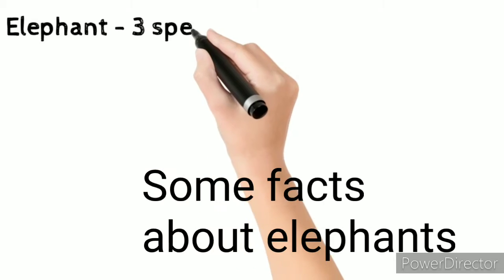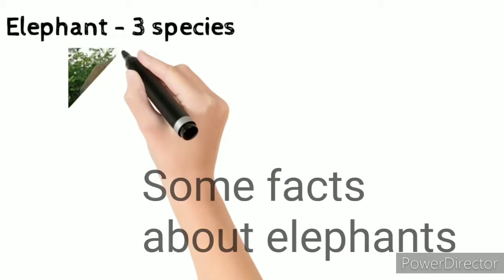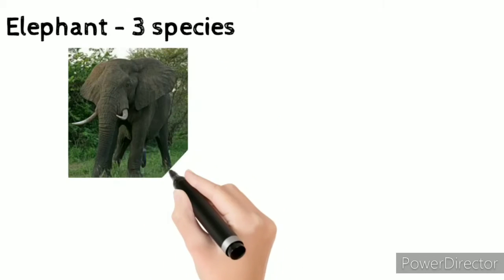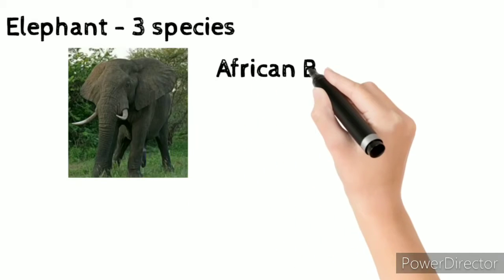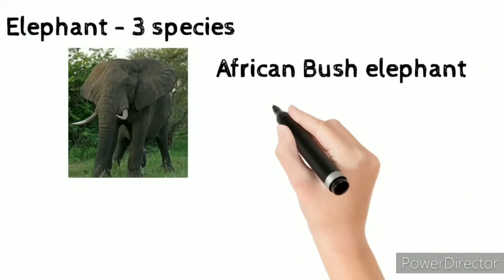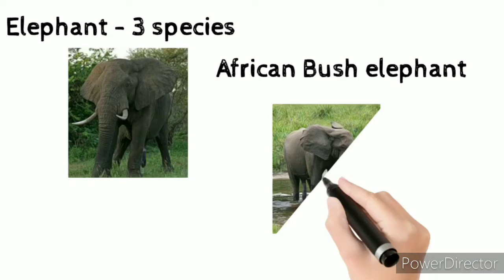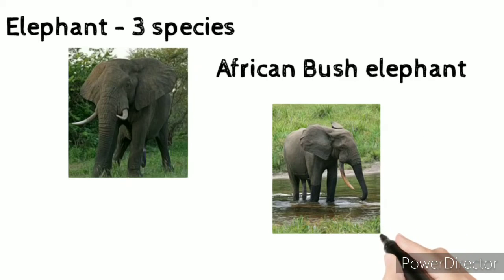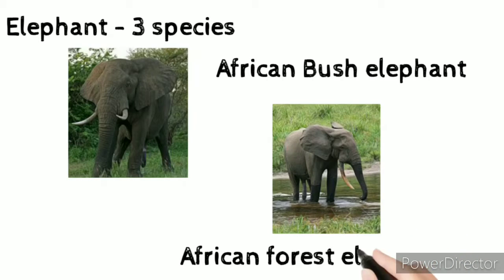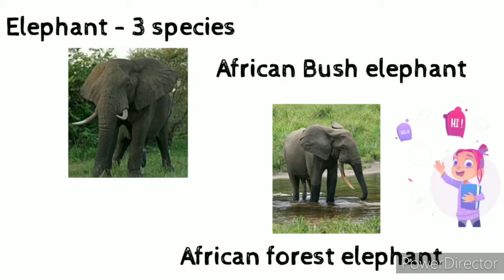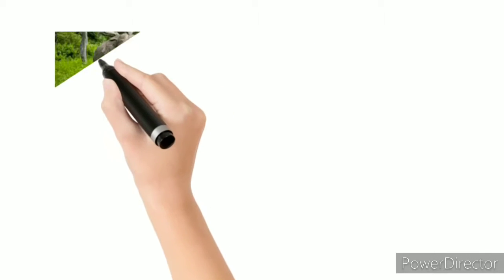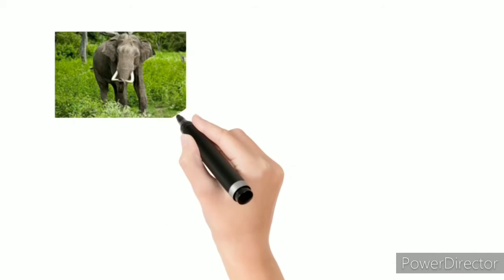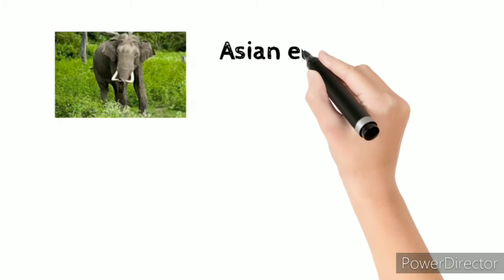Here are some facts about elephants. There are three species of elephants: African bush elephant, African forest elephant, and the Asian elephant.